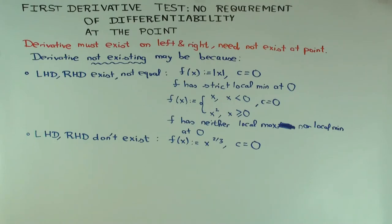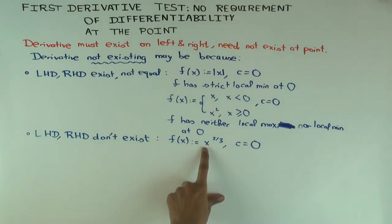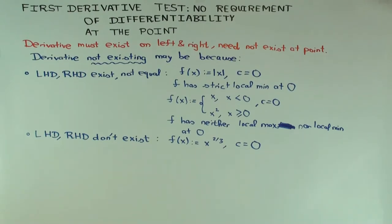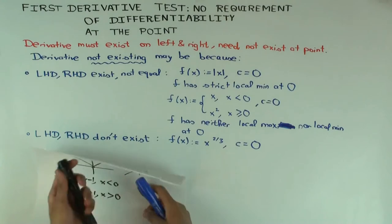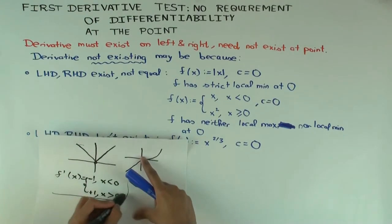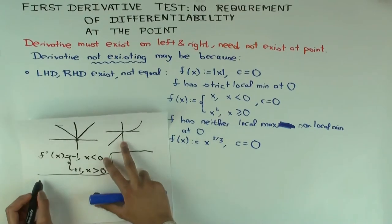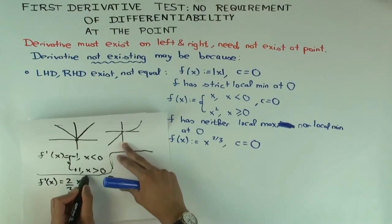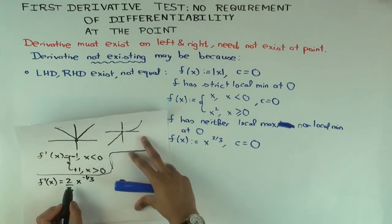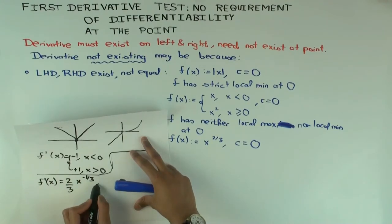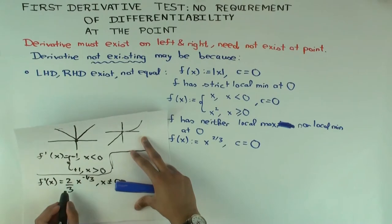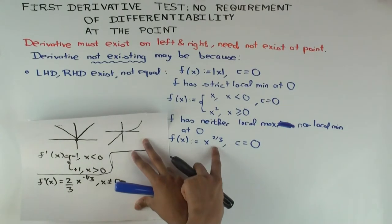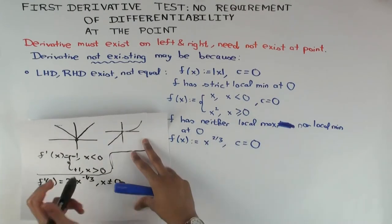You can actually see that it's a local min at zero even without using the derivative test if you have the right intuition, but let's see what this gives with the first derivative test. The first derivative is (2/3)x^(-1/3) for x not equal to zero. What happens if you take x equal to zero? Neither the left-hand derivative nor the right-hand derivative exists — they'll both be going to infinite values.